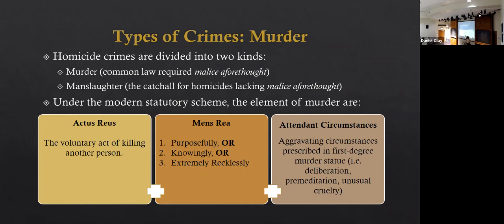Under the modern statutory scheme, the elements of murder are: actus reus — the voluntary killing of another person; and mens rea — purposely, knowingly, or extremely recklessly. Extremely recklessly is a fifth mental state, the middle ground between recklessly and knowingly. Purposely means it's your goal that the person dies. Knowingly means you're all but certain they'll die. Extremely recklessly means you're very close to certain but not quite. Then we have to prove an aggravating circumstance if we want to prove first-degree murder.